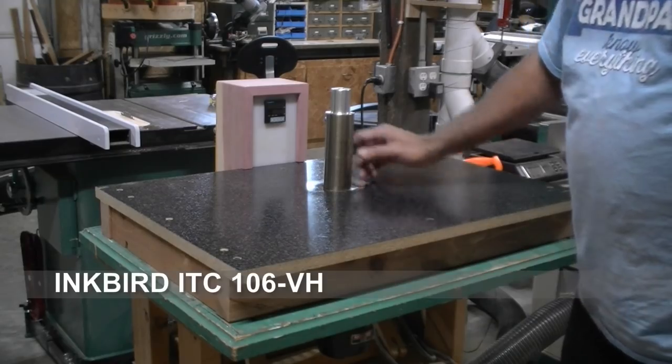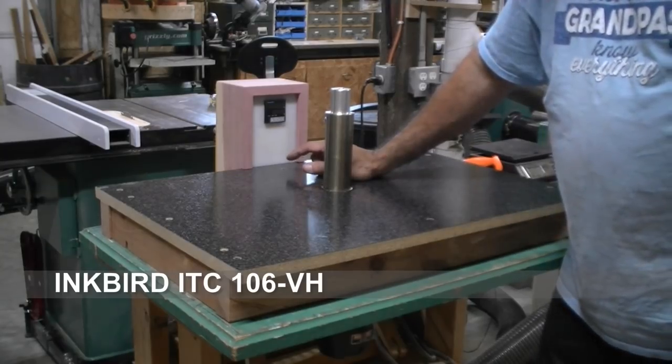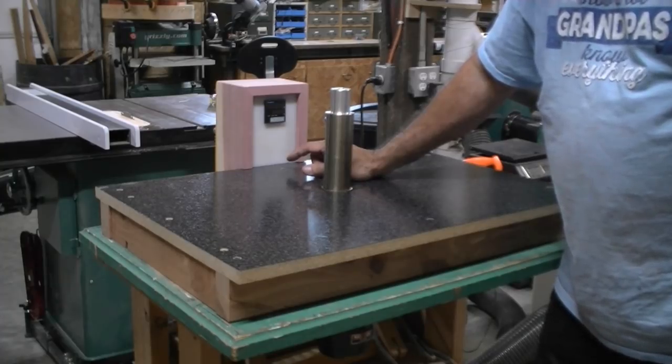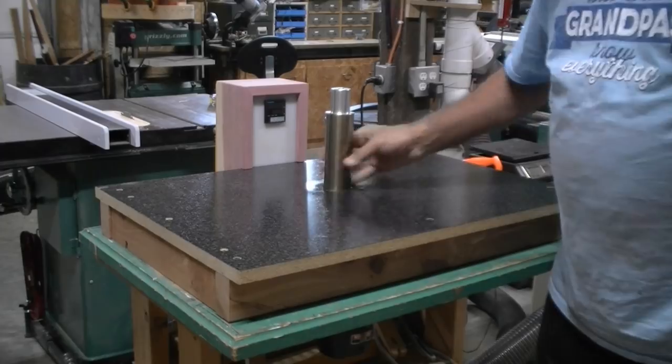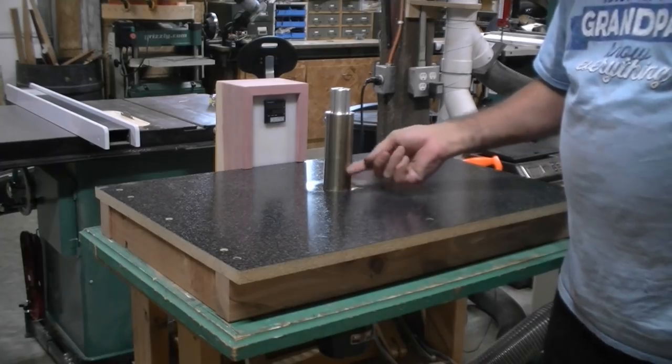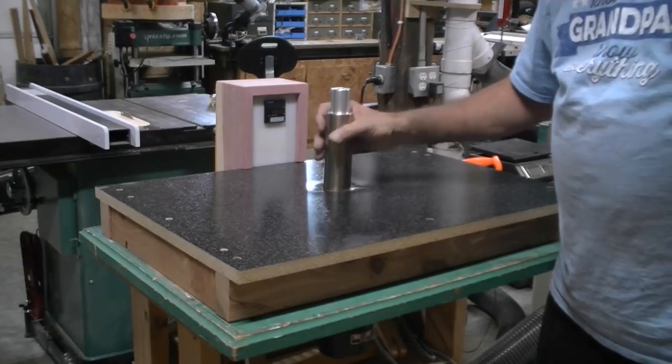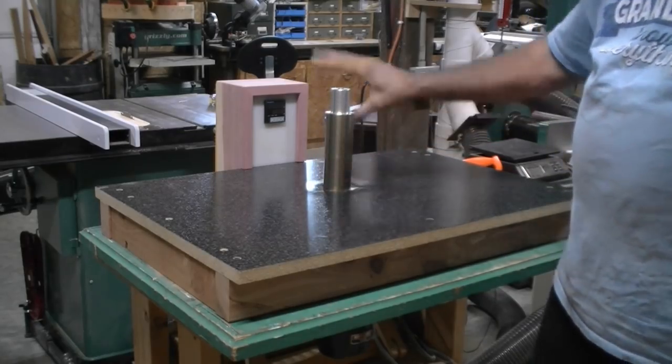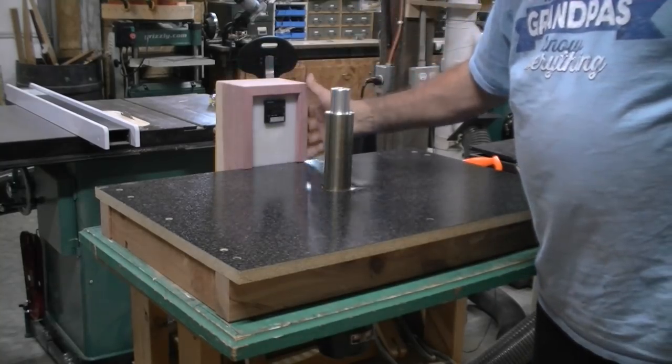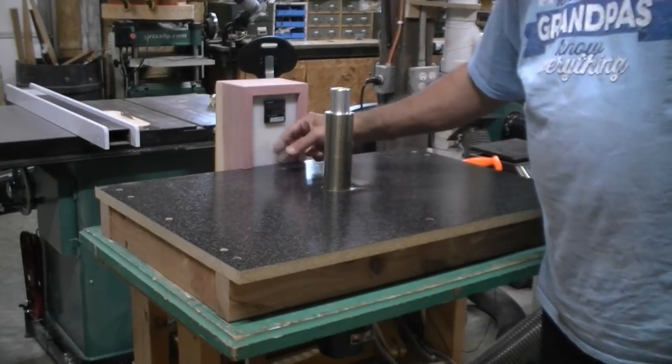This is an Inkbird 106 VH and the number means that this one has the K thermocouple. From what I've read, that's kind of the best one to get, especially for this application. The K thermocouple comes with a threaded insert that you can drill a hole, thread the hole, and then thread it up inside there. That worked perfectly for this solid piece of aluminum that we have here.